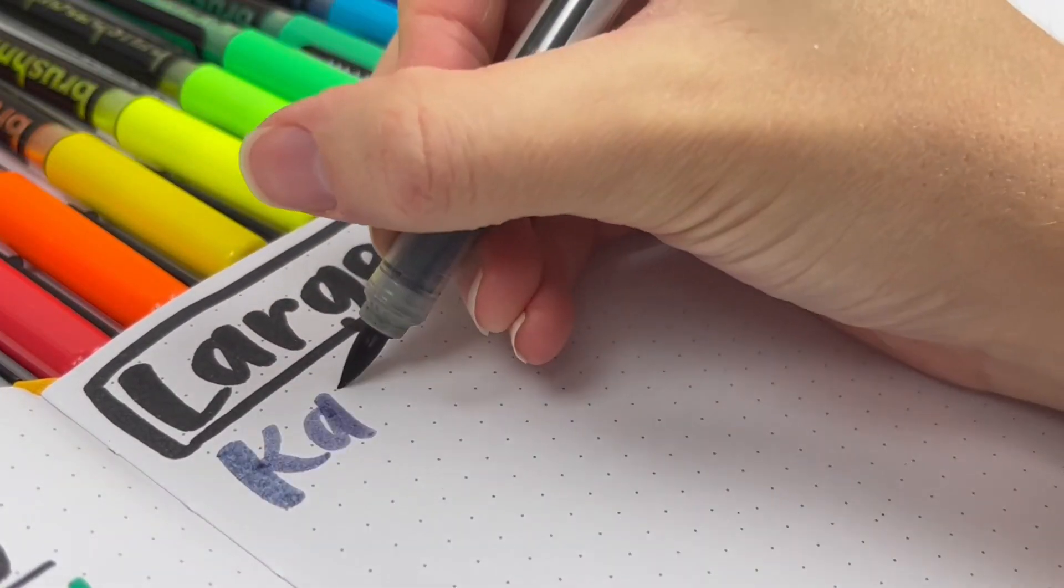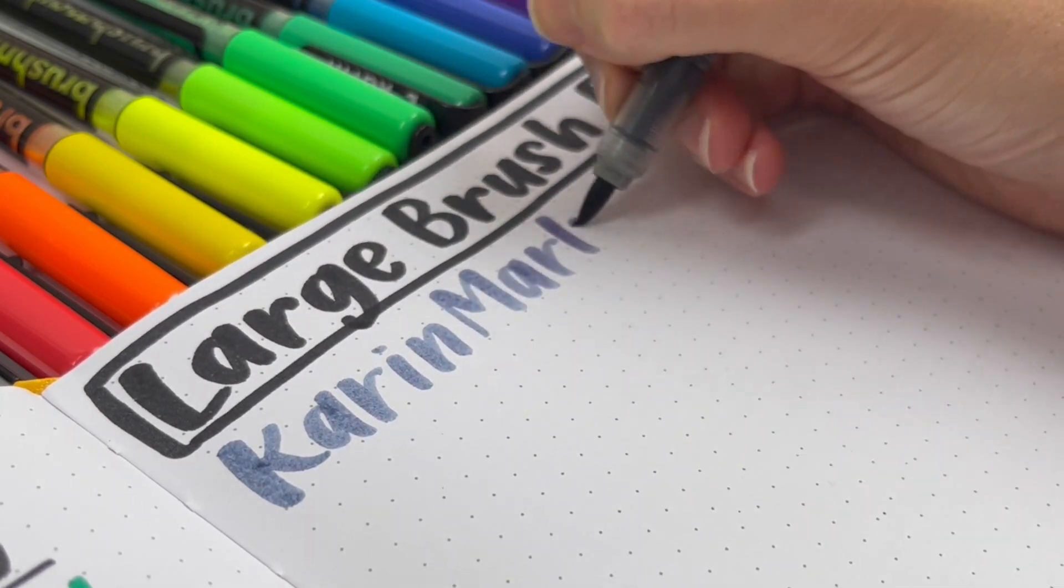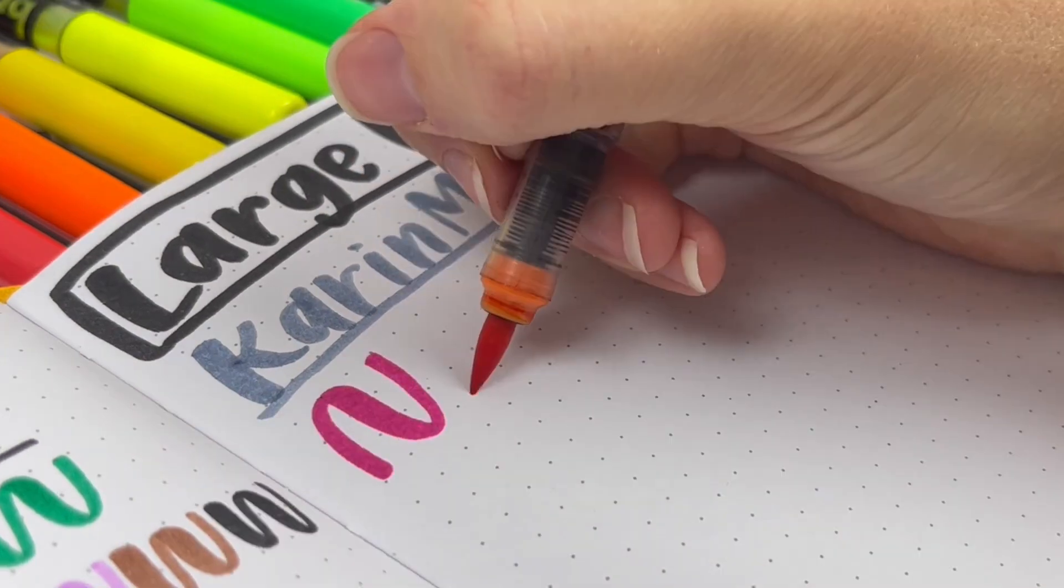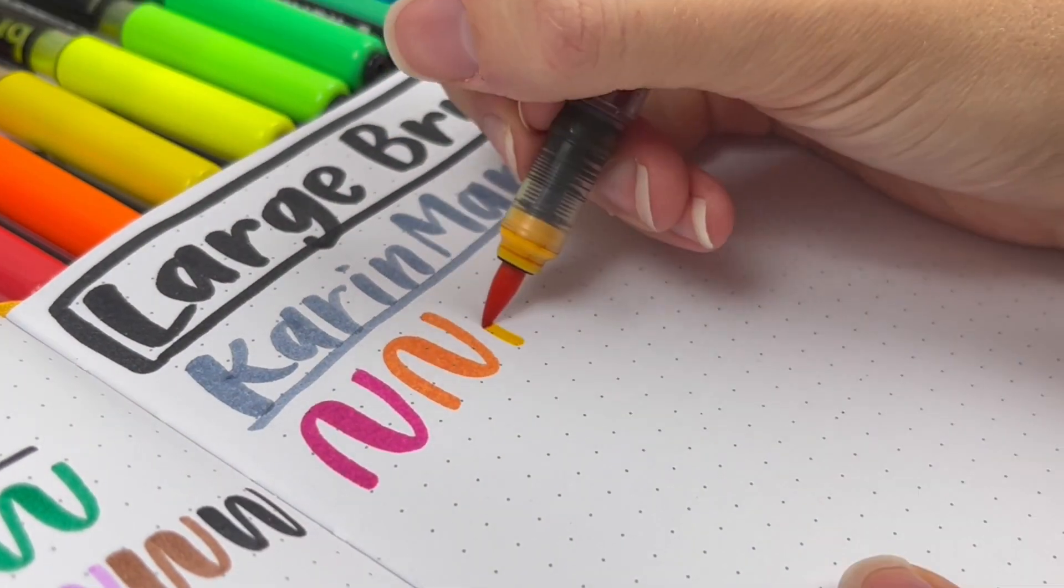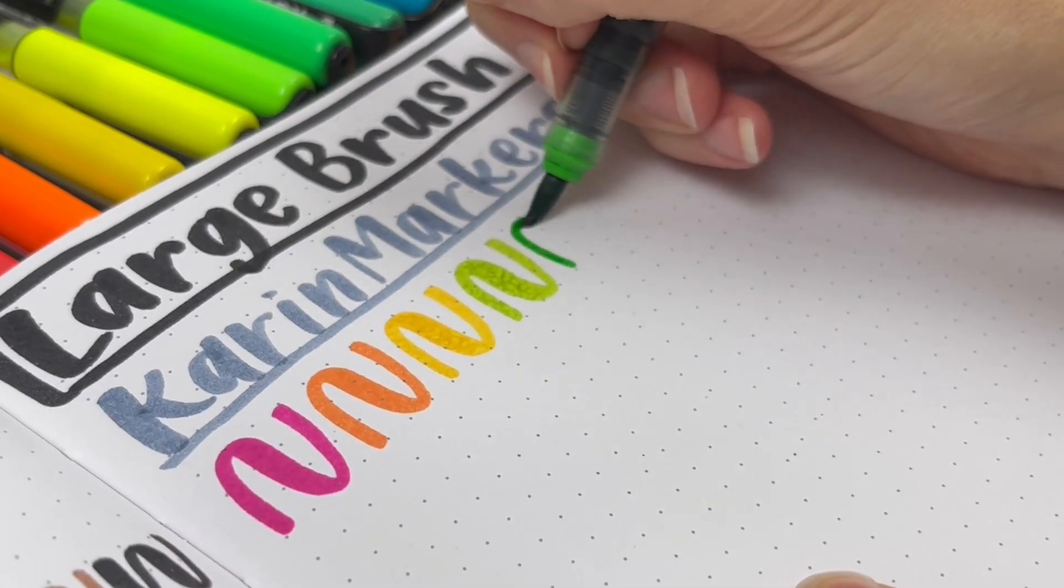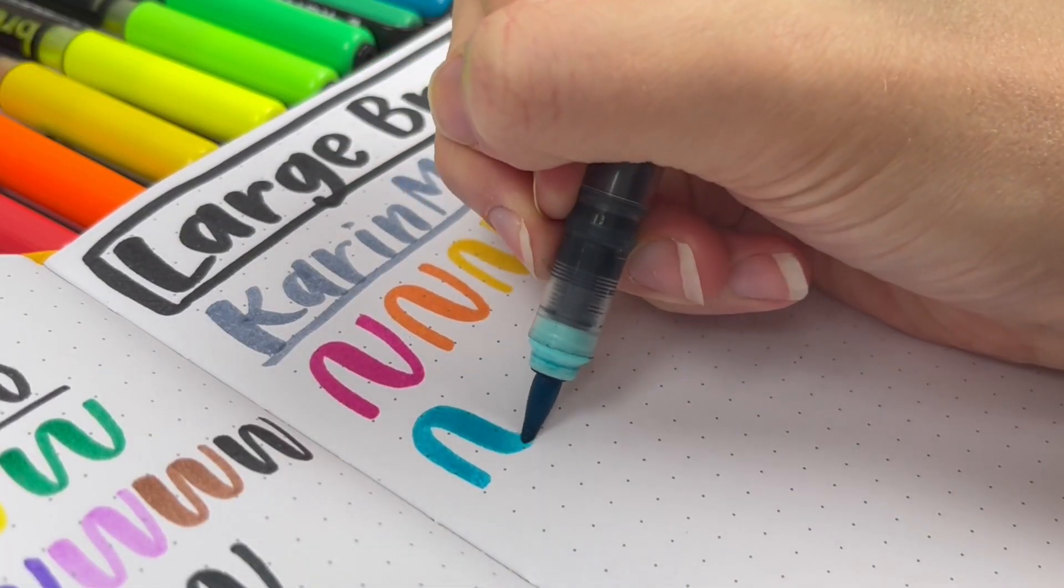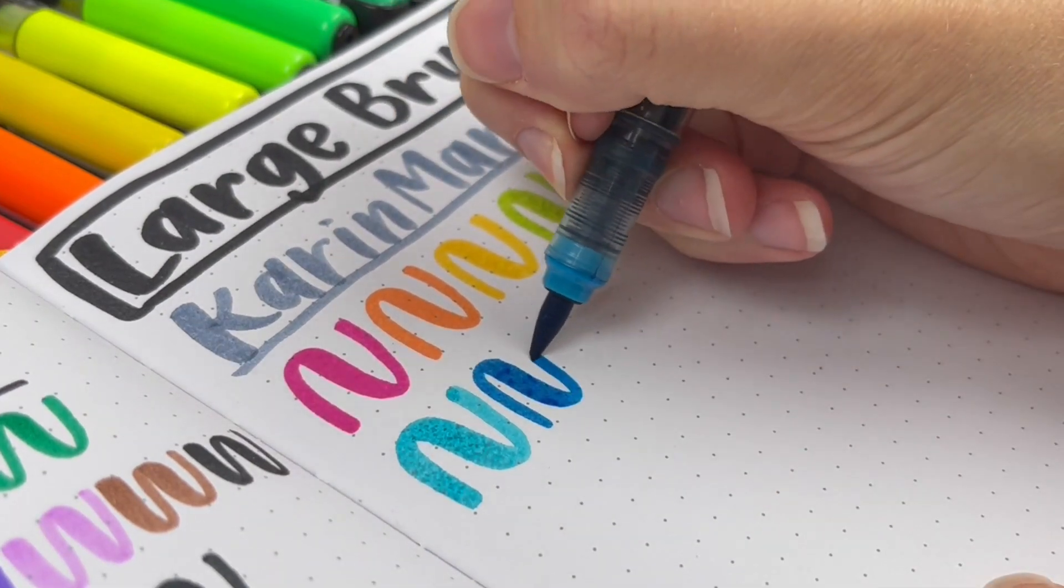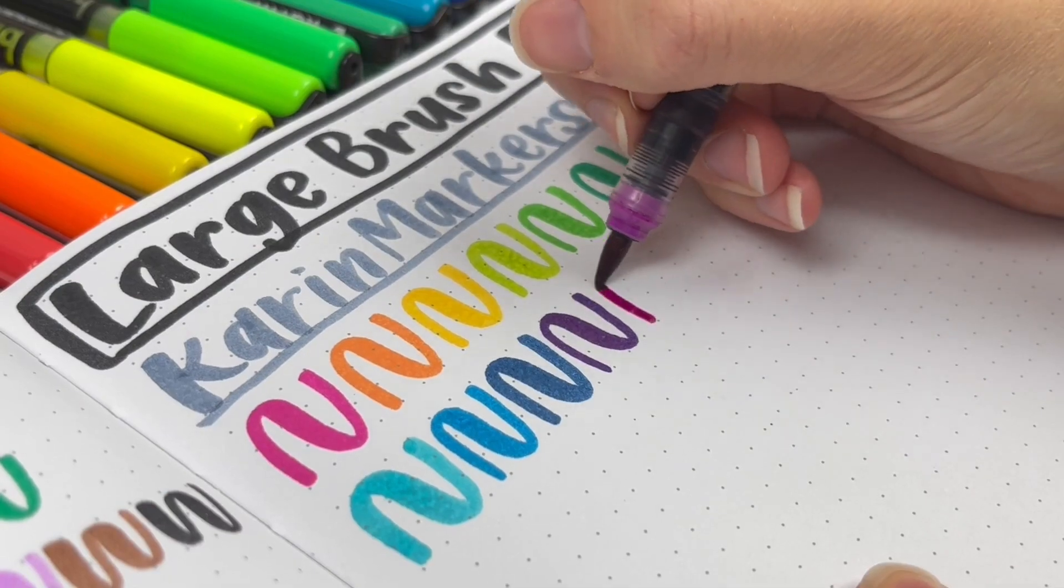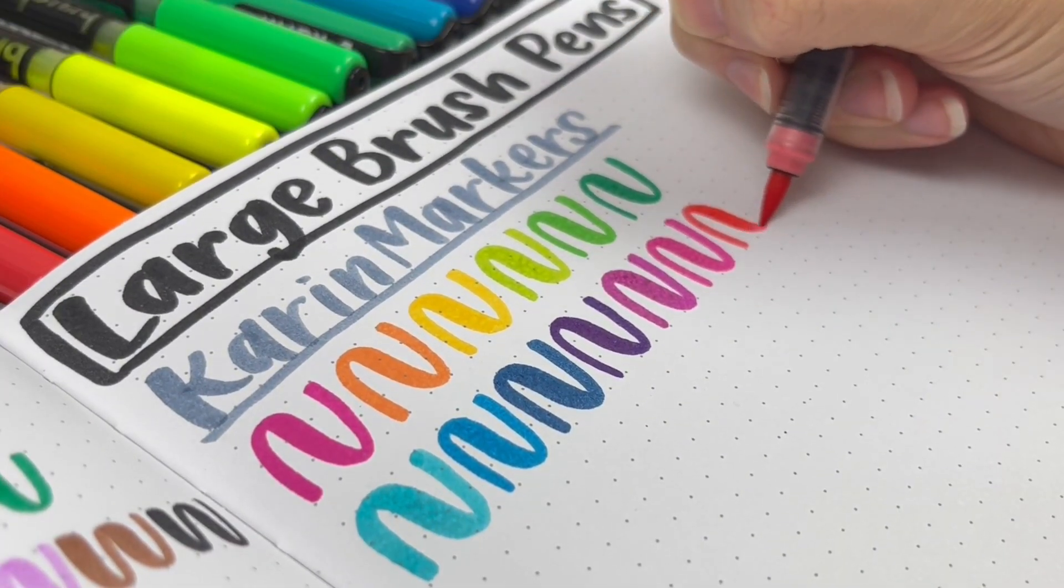The reason these are my favorite brush markers is because the brush tip is so nice. It's firm and bouncy. For a large brush pen, it's much easier to control than some other large ones. And they're so juicy, so they work great as watercolor. Although, you definitely have to use thicker paper so they don't bleed through. So if you want something to use with thin paper, these are not the ones. But it's like two-in-one, because I use these more than pulling out my watercolors.